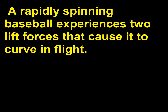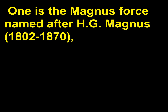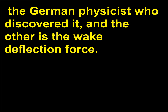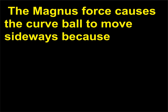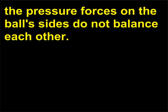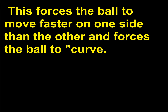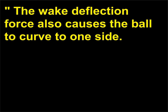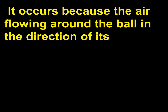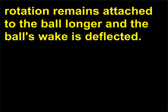A rapidly spinning baseball experiences two lift forces that cause it to curve in flight. One is the Magnus force, named after H.G. Magnus (1802–1870), the German physicist who discovered it, and the other is the wake deflection force. The Magnus force causes the curve ball to move sideways because the pressure forces on the ball's sides do not balance each other — the stitches on a baseball cause the pressure on one side to be less than on its opposite side, forcing the ball to move faster on one side and curve. The wake deflection force also causes the ball to curve to one side because air flowing around the ball in the direction of its rotation remains attached longer and the ball's wake is deflected.